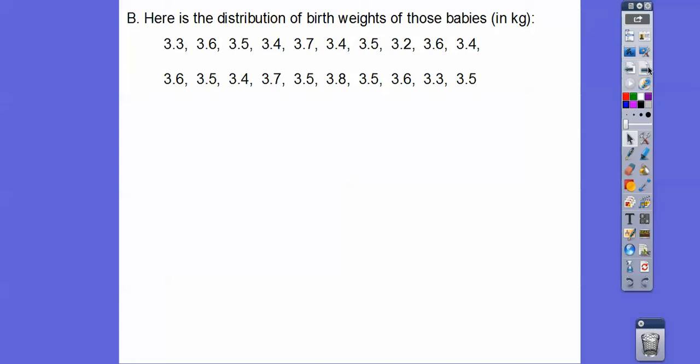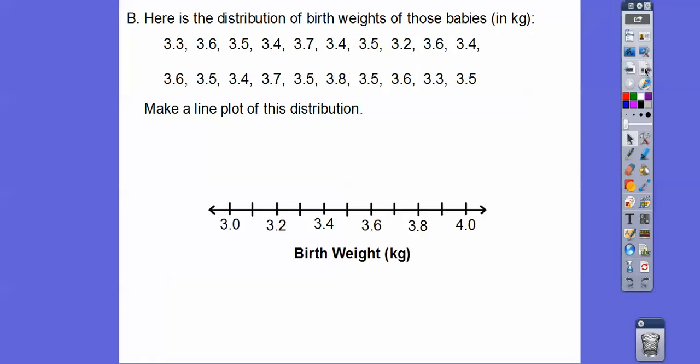So here's the distribution of the birth weights of those babies in kilograms. So what we're going to do is make a line plot of that distribution. So I see some numbers all the way down to, I don't know, 3.2, I think. And then all the way up to about, I think that's the biggest one, 3.8. So just make sure your line covers that. So I went from 3 to 4. And again, we just plot. So we'll put an X above 3.3. So an X would go right there. An X would go above 3.6. And then stack them when you get more than one. So most of them were 3.5 kilograms right there.